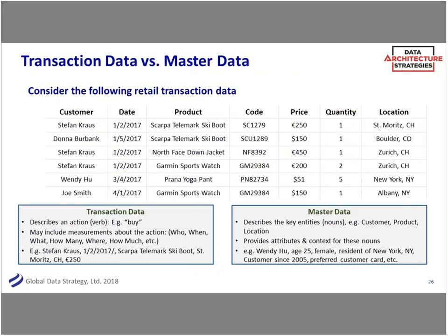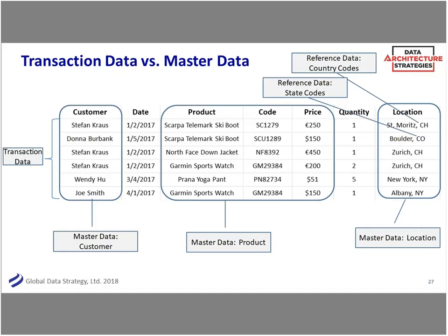A little more on transaction versus master data — they are different things, back to that fit-for-purpose conversation. A transaction is the fact that Stefan Krause bought a Scarpa Telemark ski boot at a certain price in St. Moritz, Switzerland; I bought the same ski boot in Boulder, Colorado — what price, what date, what time. That's your core relational transactional data. The master data is: do we have a single view of customer, that Donna Burbank has a certain zip code? Are my state codes right — CO is a state code, CH is a country code for Switzerland? Do I have euros versus dollars? These are all that core master data, very different from your transactional list.